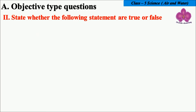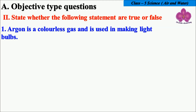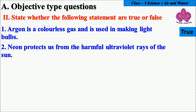Now next question: state whether the following statements are true or false. First, Argon is a colorless gas and is used in making light bulbs. You can write T for true or F for false in the comment section. It is true. Second, Neon protects us from the harmful ultraviolet rays of the sun. False.